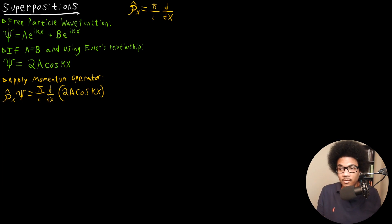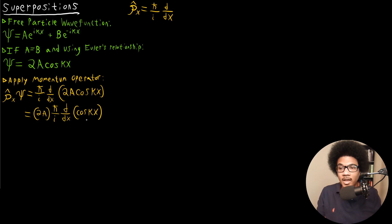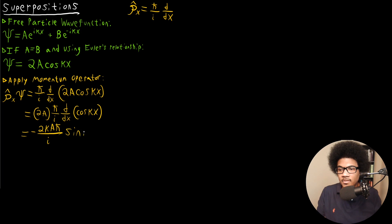This is our wave function, and we want to take its derivative to be consistent with the linear momentum operator. The 2A is a constant, so we can pull it out front, giving us 2A times h-bar over i times d/dx of cosine kx. The derivative of cosine is just negative sine, so we end up with negative 2kA times h-bar over i times sine kx.